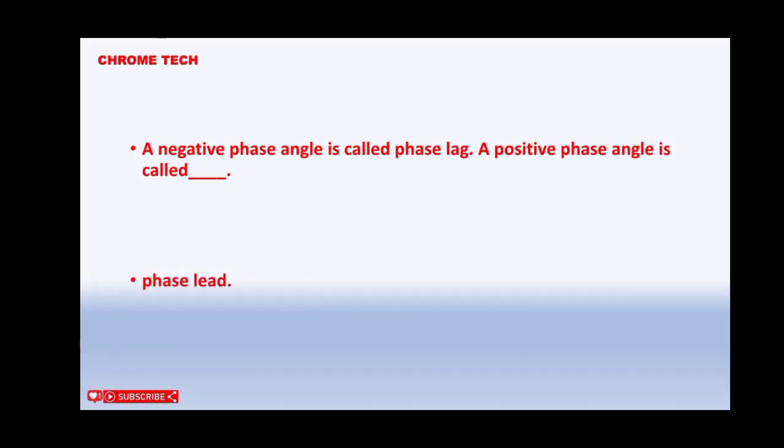A negative phase angle is called phase lag. A positive phase angle is called. Phase lead is the correct answer.